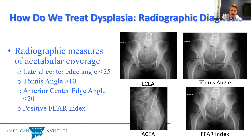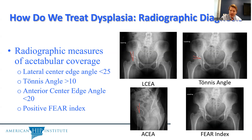For treatment of hip dysplasia, we first need to confirm the diagnosis. For a patient presenting with hip pain, we'll get radiographs. On an AP radiograph, multiple measures can evaluate acetabular coverage. The most common is the lateral center edge angle, which focuses on lateral coverage of the femoral head. The tonus angle reflects the acetabular dome and is a marker of dysplasia when more than 10 degrees. The anterior center edge angle is taken through a false profile radiograph to assess anterior coverage. It's important to recognize the acetabulum is a three-dimensional structure, so different radiographic positions may be needed.